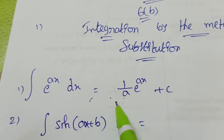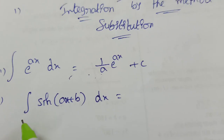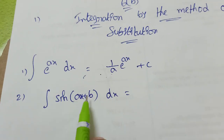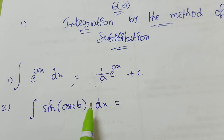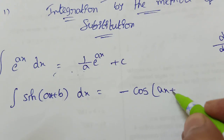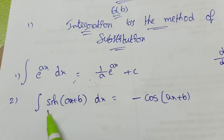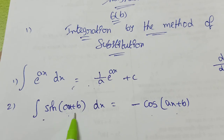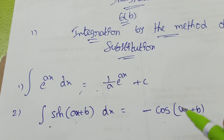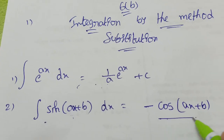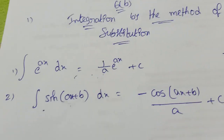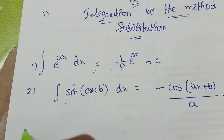Now, for the integration of sin(ax+b): the integration of sin x is -cos x, so you write -cos(ax+b). The coefficient of x is a, so you divide by a. The answer is -(1/a)cos(ax+b) + C.